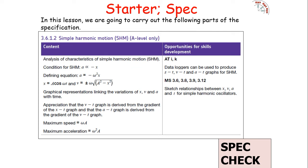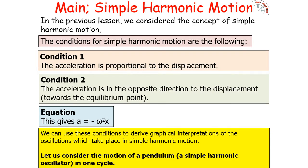We're going to be looking at the following part of the specification — in particular the graphical representations linking the variations of x (displacement), v (velocity), and a (acceleration) with time, and how the different graphs can be derived from each other. We'll also aim to sketch the relationships between x, v, a, and t for simple harmonic oscillators.